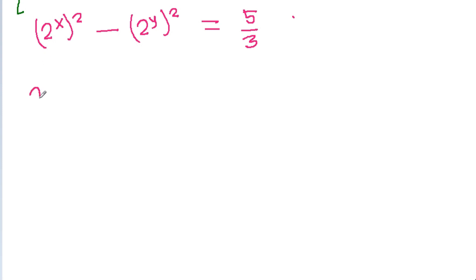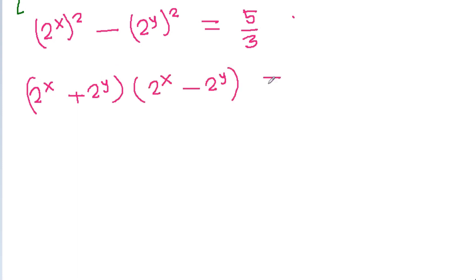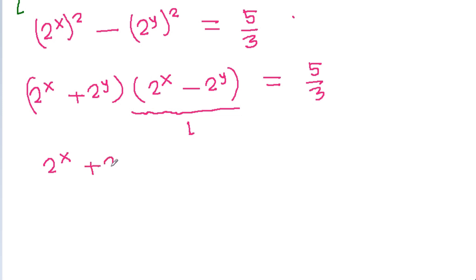So, this will be equal to 2 power x plus 2 power y times 2 power x minus 2 power y, that is equal to 5 by 3. And we have given 2 power x minus 2 power y is equal to 1. So, we can get 2 power x plus 2 power y is equal to 5 by 3.